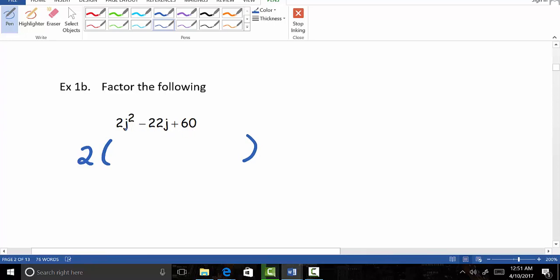And that's really the only thing that we can pull out right now. We can't pull out an extra j because these two have j's, but 60 does not. So it looks like the only thing that we can pull out right away is just a 2.